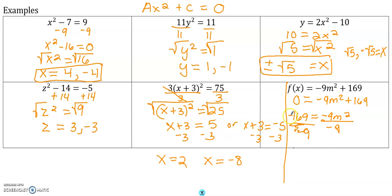So we have a negative divided by a negative, I know is a positive. So let's leave it like this: 169 over 9, and set it equal to m².